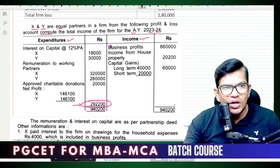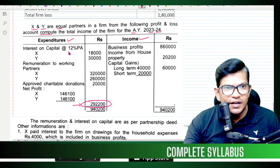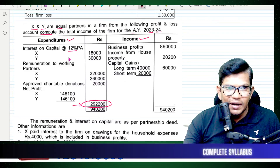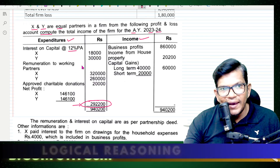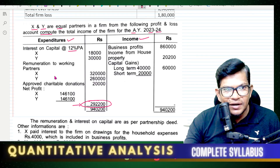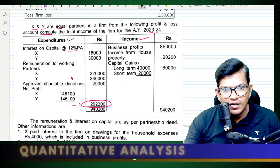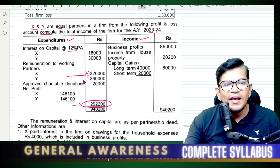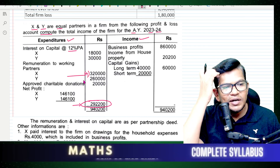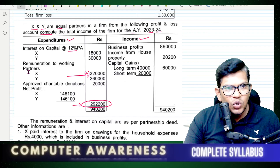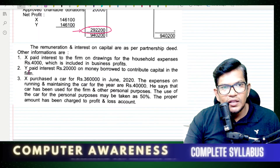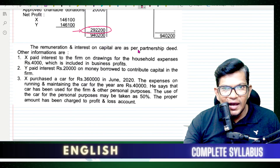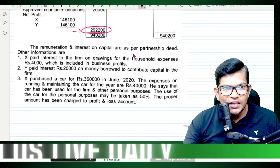This includes 12% interest on capital and remuneration. These items — remuneration and interest on capital as per the partnership deed — will be added back or disallowed.